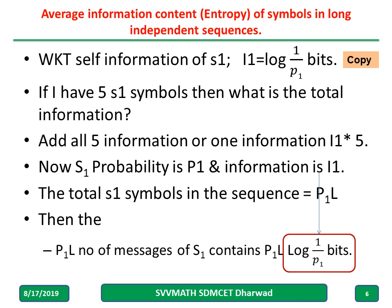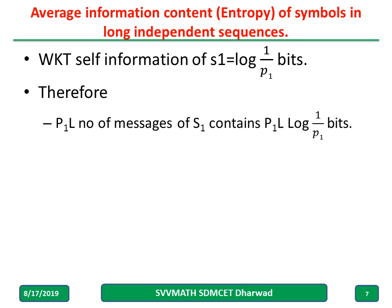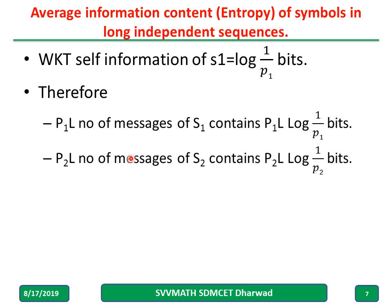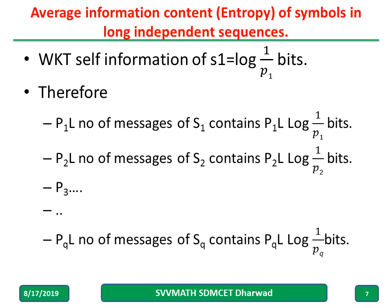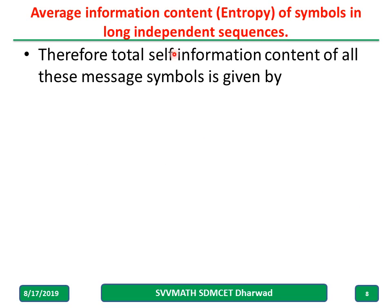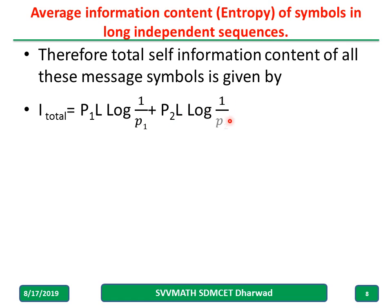Similarly for s2: p2 times L messages of type s2 each contribute log(1/p2) bits, giving p2 times L times log(1/p2) total bits. And so on up to sq: pq times L times log(1/pq) bits. Now if I want the total self-information including all message symbols, I can write: I_total = p1·L·log(1/p1) + p2·L·log(1/p2) + ... + pq·L·log(1/pq).